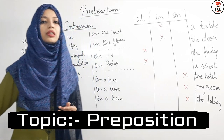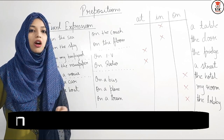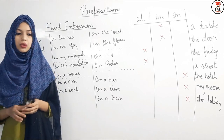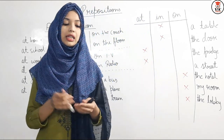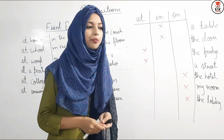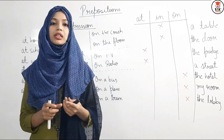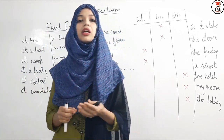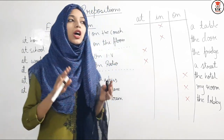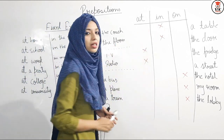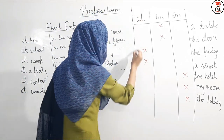Prepositions are words used to show the location, time, or place of a person or a thing. We use prepositions to show a location — whether of a living person or a non-living thing. If we want to show location or mention a particular time, we use prepositions.